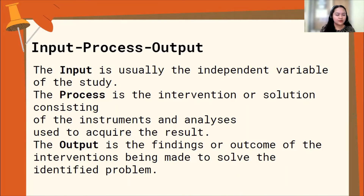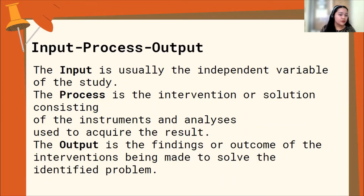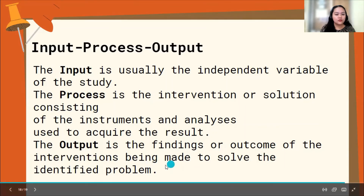Let us define the three elements. The input is usually the independent variable — you should always know what the independent variable of your study is, along with what appears in your questionnaire. The process is the intervening solution consisting of the instruments and analysis used to acquire the result, such as questionnaires, surveys, and interviews. The output is the findings or outcome — the anticipated result of your study.